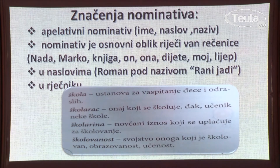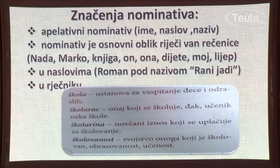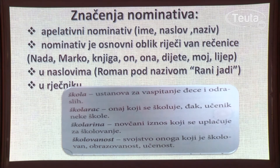Nominativ je u upotrebi i u naslovima umjetničkih dijela, na primjer roman pod nazivom Rani jadi. Također i u riječniku — kada koristite riječnik, uočit ćete da su imenice poređane po abecedi ili jazbuci i da su njihovi oblici dati u nominativu jednine. Pa imamo imenice škola, školarac, školarina i školovanost u nominativu jednine.